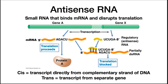RNA molecules can also regulate gene expression. One example is antisense RNA — a complementary piece of RNA that can bind to a messenger RNA and either block or encourage its translation. For example, gene A is the messenger RNA. In the absence of gene X RNA, gene A is translated into protein A. Gene X is an antisense RNA that, if synthesized, will form a double helix with gene A and prevent its translation. These types of systems can be trans, where the antisense transcript is from a separate gene, or cis, where the antisense RNA is transcribed directly from the complementary strand of DNA.